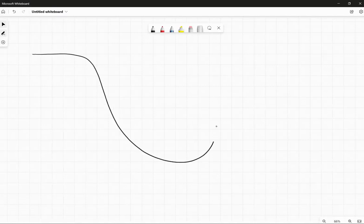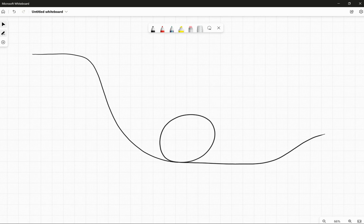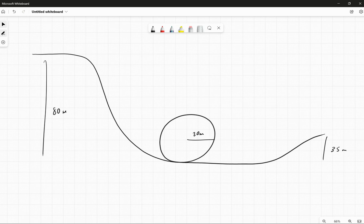Let's say we have a roller coaster that somewhat looks like this, where this height is 80 meters, the radius of the loop is 20 meters, and then this height is 35 meters. And our roller coaster starts off going with a speed of 10 meters per second.